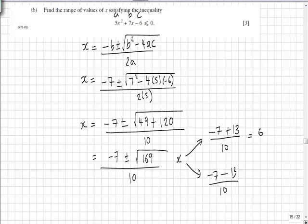So in the first instance, we get a value of 6 over 10, or 3 fifths, and in the second place, we get minus 20 over 10, which is minus 2.